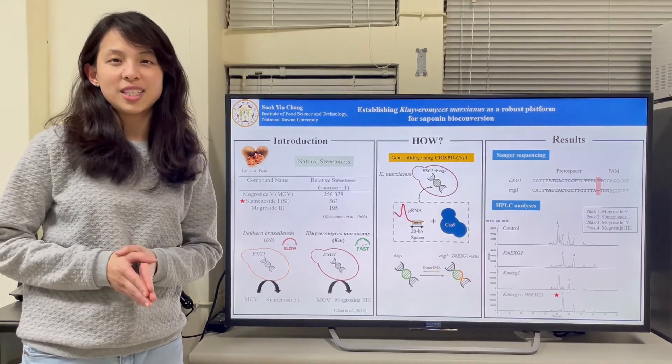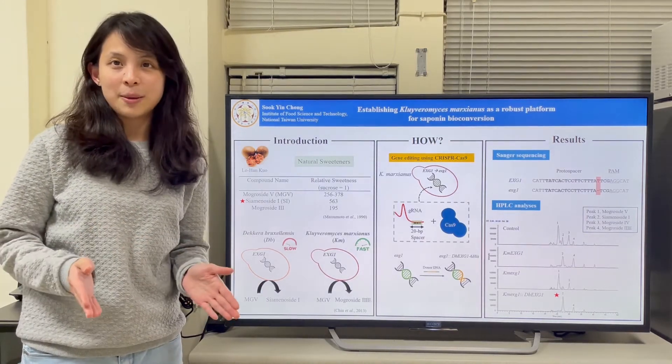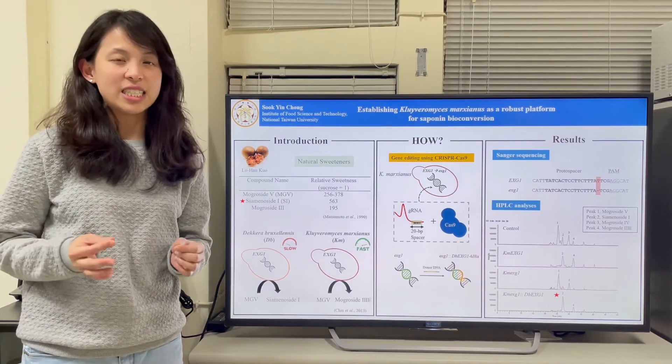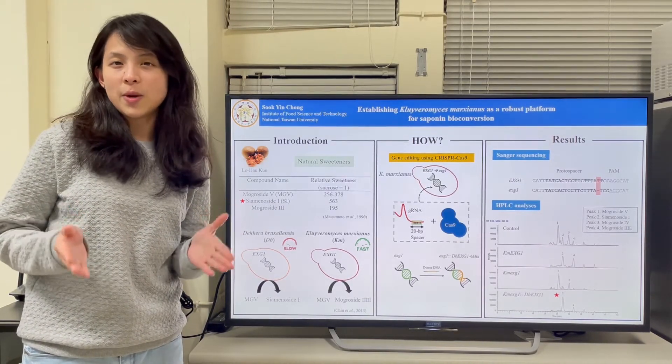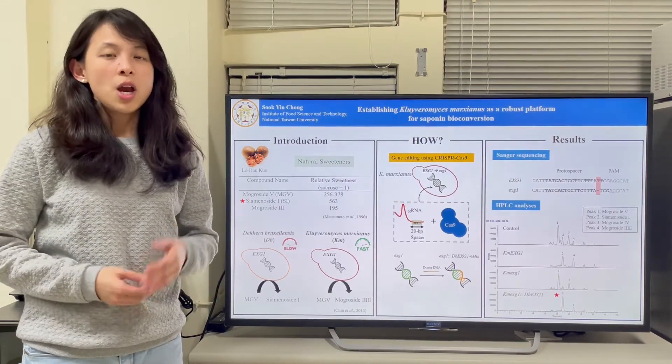This intense natural sweetener has definitely more economic value than the others. But the amount of Seminolcide 1 in Lu Han Guo is little. So how can we obtain Seminolcide 1 in large amounts and use it in the food industry?